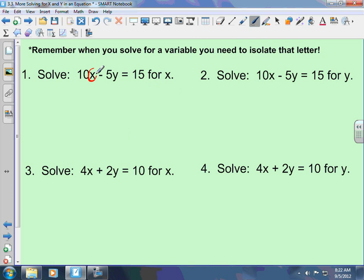So, that means the first thing I need to do is ship the negative 5y to the other side. I do that by doing the opposite. So, I'm going to add 5y to both sides. These cancel. 5y minus 5y is 0, leaving me 10x equals... Always put your number with a letter, your coefficient first. 5y plus 15.